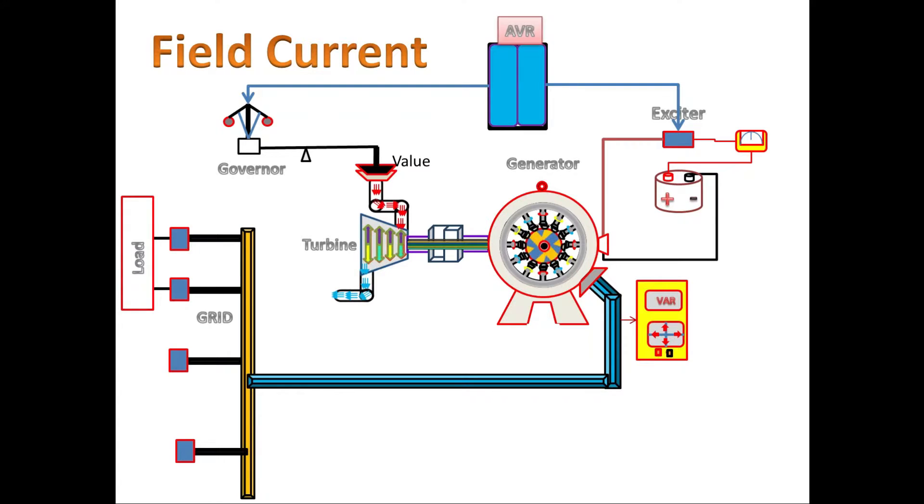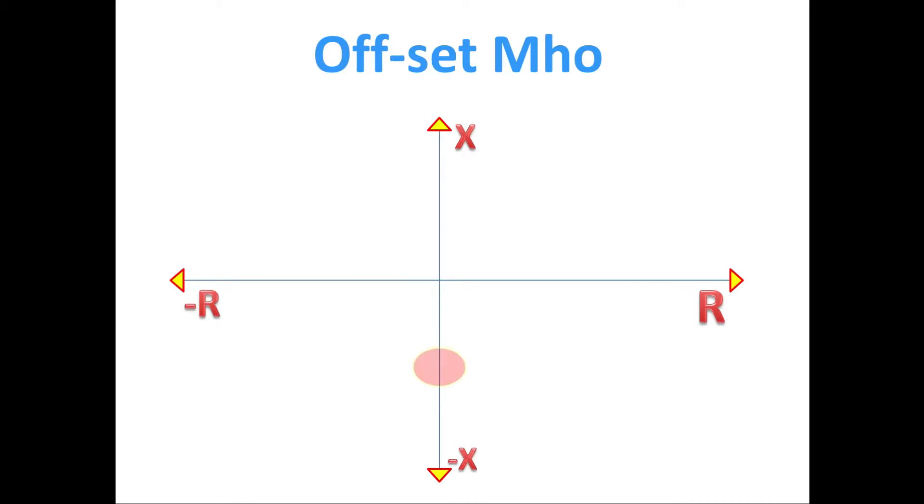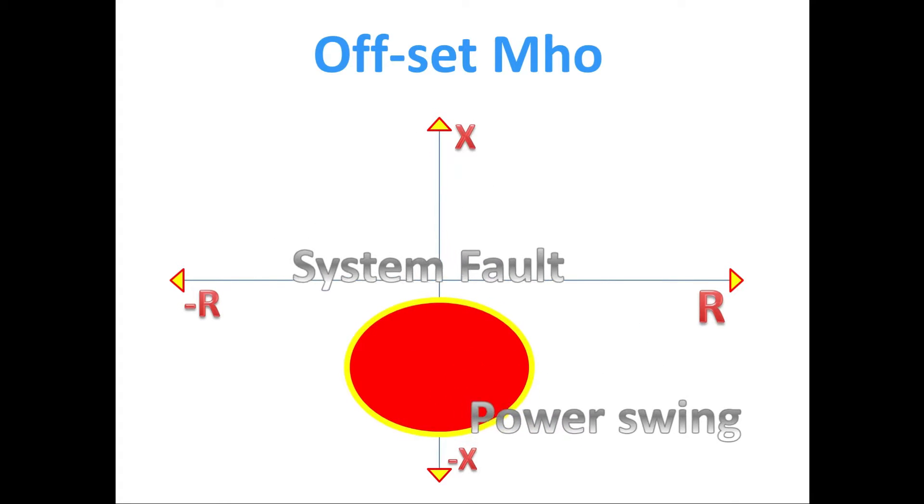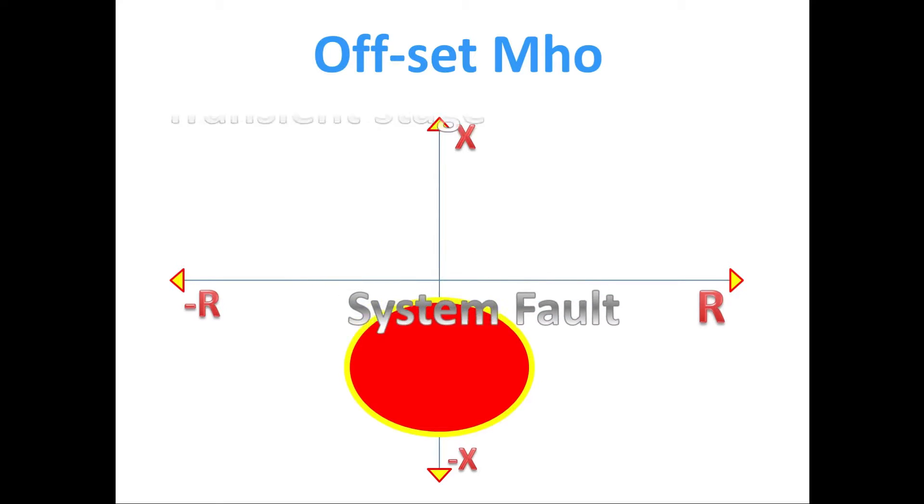The third one is by using impedance method. In that, we have a special one, offset Mho. This is one of the successful methods to detect the loss of field. And also it avoids more mal-operations such as for power swing fault, system faults such as heavy short circuit and earth fault, and also stable transient condition. In this offset Mho, we will see a little deeper.